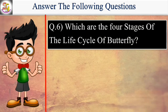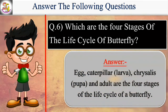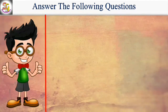Which are the four stages of the life cycle of a butterfly? Egg, caterpillar, larva, chrysalis, pupa, and adult are the four stages of the life cycle of a butterfly.